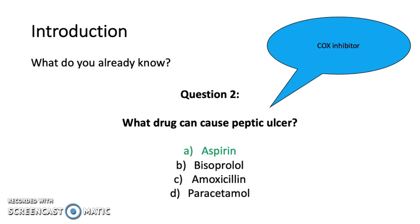Aspirin is a COX inhibitor. Within certain pathways, COX inhibitors prevent prostaglandin from being released. Prostaglandin is indirectly associated with the release of bicarbonate ions, and bicarbonate ions are responsible for neutralizing the acid in the stomach.